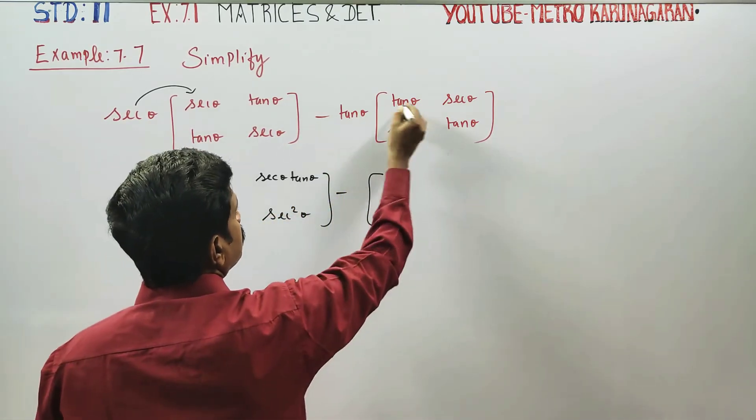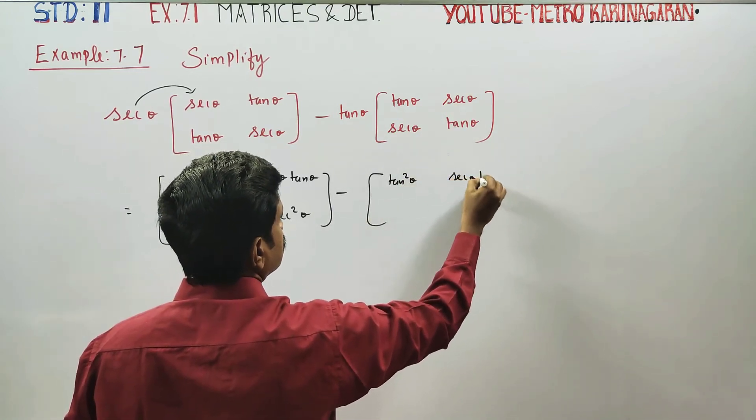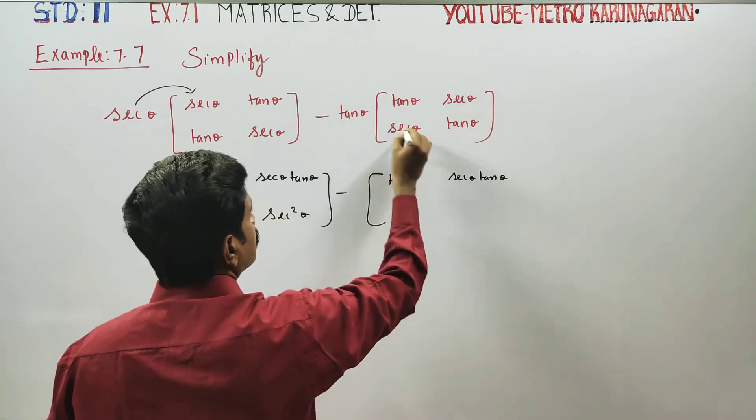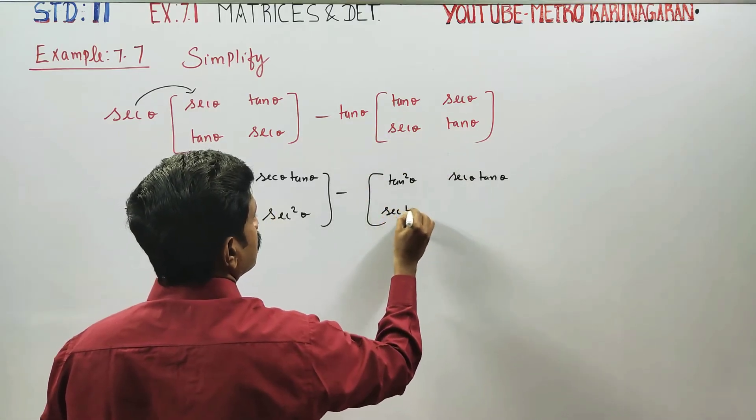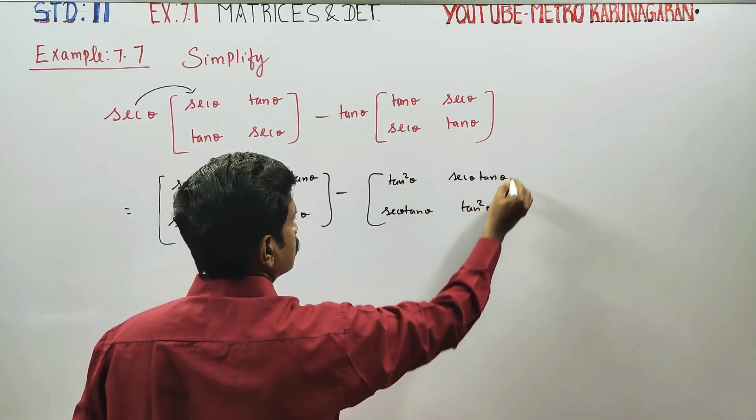You can do tan squared theta here, tan squared theta here, this is secant theta tan theta here, this is secant theta tan theta, and this is tan squared theta here.